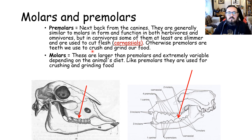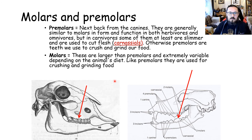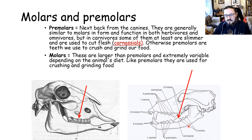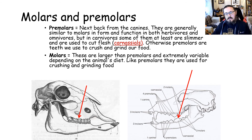Looking at molars and premolars — the previous slide was a reminder of canines, and this one focuses on the role of molars. In carnivores, molars tend to be smaller and less prominent because the carnassials are the main cutting teeth. In herbivores, the molars are the key teeth — they are the grinding teeth.